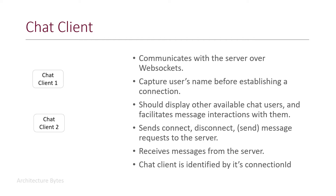The chat client is the front end that the end user uses. It could be a web page with JavaScript libraries or it could be a mobile app. It captures the username before the application can be used and communicates with the API Gateway over WebSockets. It sends connect, disconnect, and message requests to the server and also receives messages from the server. Chat clients are identified by a connection ID, which becomes available the first time a chat client establishes a connection with the API Gateway. On the front end, it displays a list of available chat users and facilitates message interactions between them.